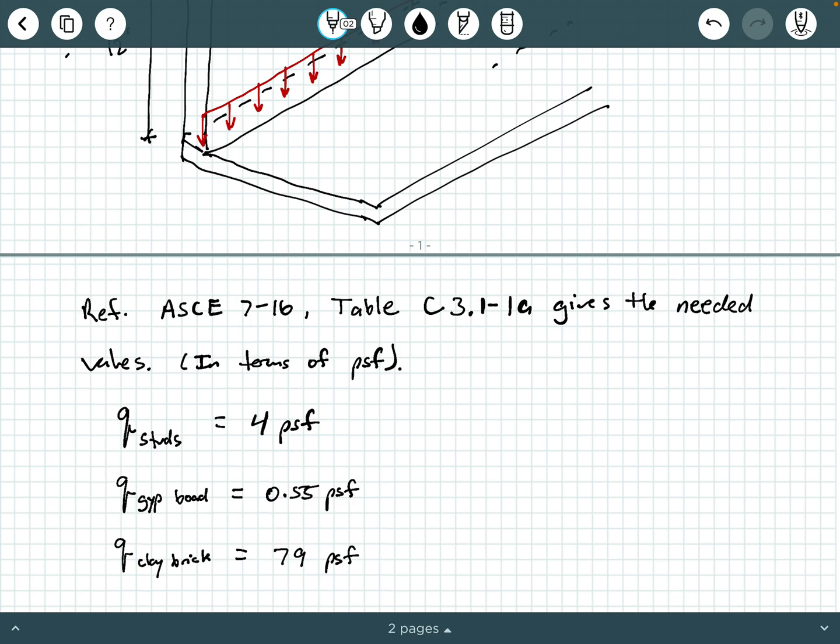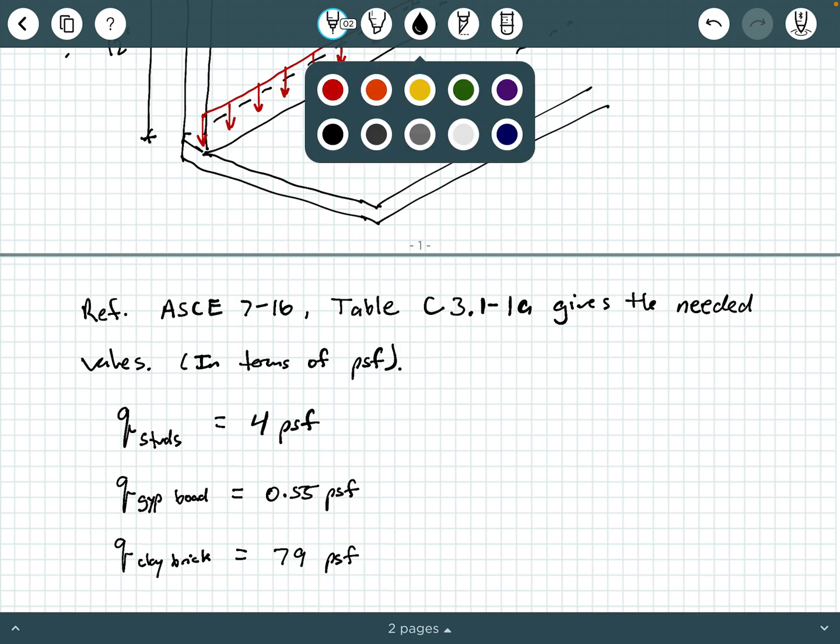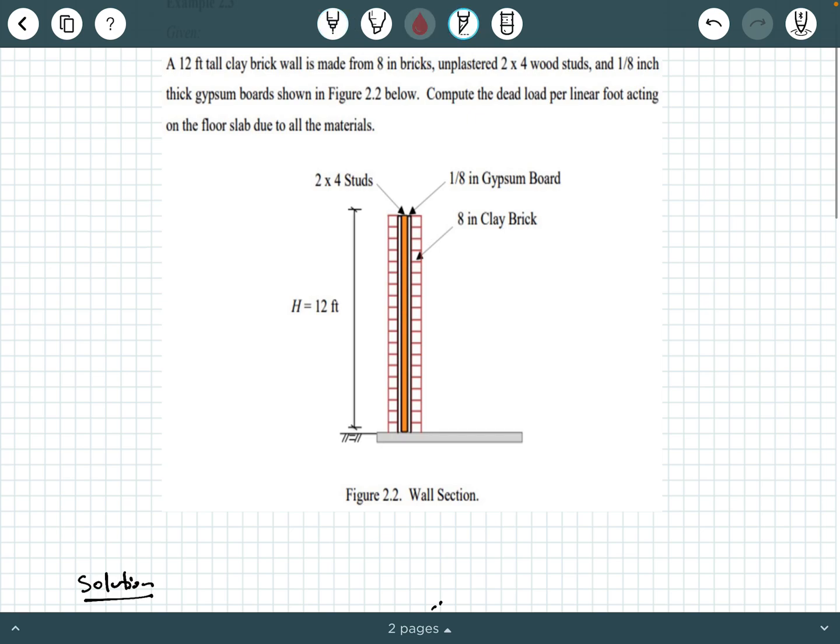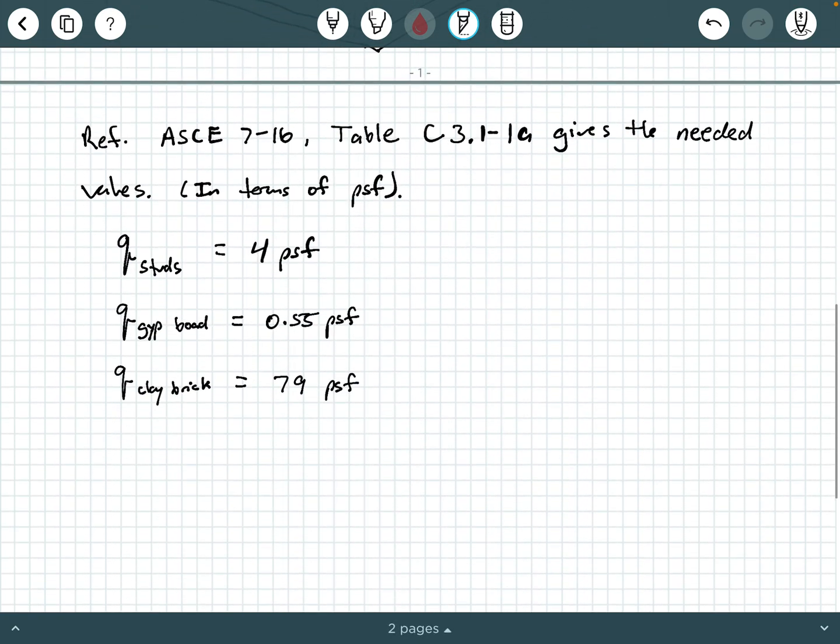Looking back at the wall section, you see we have some double layers of both the clay brick and the 1/8-inch gypsum board. What do we need to do since we have double layers? We're going to need to multiply the weight of the clay brick and the gypsum board by two, because we have two layers of it. Eventually we're going to end up multiplying these by two.